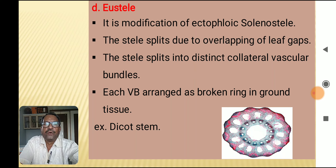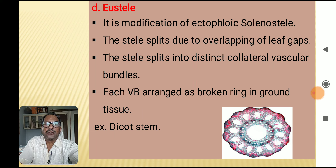The fourth type is eustele. It is a modification of ectofloic solenostele. The stele splits due to overlapping of leaf gaps, resulting in distinct collateral vascular bundles arranged in a broken ring in ground tissue. It is a characteristic feature of the dicot stem.